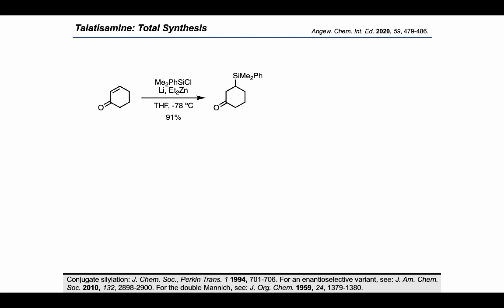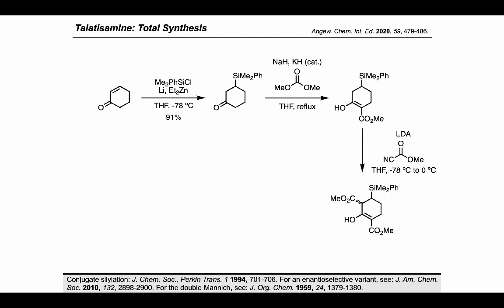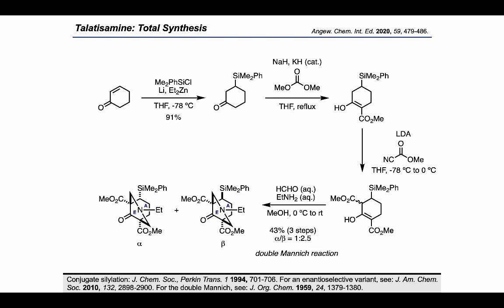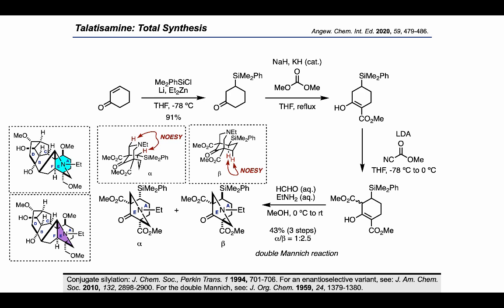Continuing on, the ketone was elaborated into a beta-ketoester using a Claisen condensation. This beta-ketoester, sitting as the enol, was elaborated on the other side using Mander's reagent in another Claisen condensation. The authors then performed a double Mannich reaction using formaldehyde and ethylamine. This resulted in a diastereomeric mixture of the alpha and beta-silanes, which were assigned using NOESY correlations between the protons shown. These types of 2D NMR assignments were used throughout the synthesis to assign diastereomers.